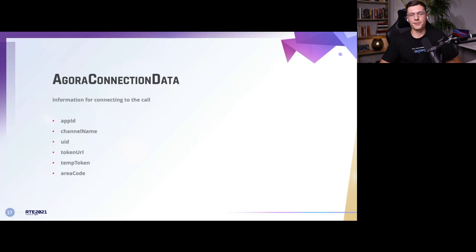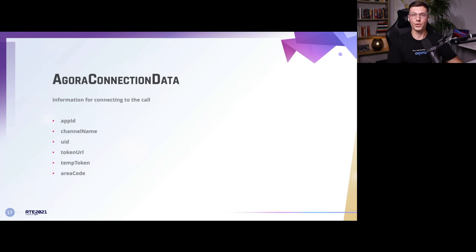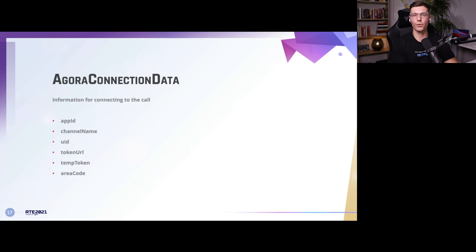The AgoraConnectionData contains all the information you need to actually connect to your call. It's very similar to the actual Agora SDK — the official agora_rtc_engine package. You'll need to pass an app ID (which you get from the Agora console as seen in the video), a channel name, and optionally a UID if you want to tell apart different users from a database. You can add a token URL so if you have a token server deployed, it will generate new tokens when they're about to expire — just add the URL there — and you can also add a temporary token for testing.